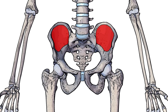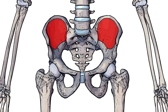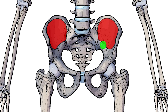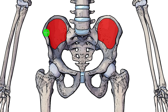So let's take a look at the origin. I've got that marked out here in red. That's going to be the superior two-thirds of the iliac fossa. The iliac fossa is just the smooth and concave surface of the ilium. The lower third is the portion not highlighted here, so the origin is in that superior two-thirds of the iliac fossa.